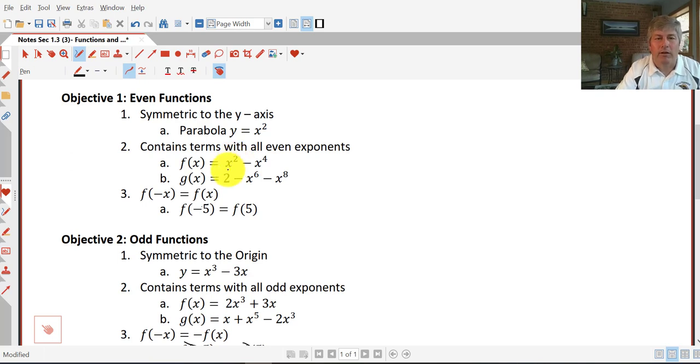Because we have even exponents, it's going to force every negative input to become a positive input. So negative five and f of five are going to be equivalent because of the even exponents.